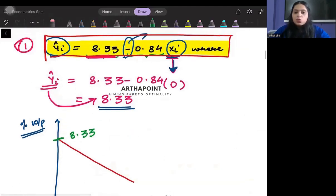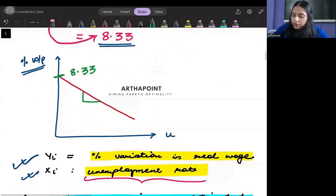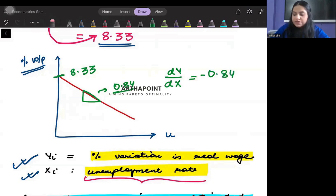And if you notice, this is minus 0.84. The negative sign shows it's downward sloping. And if I want to find the slope of this line, it will be 0.84. If I were to find dy by dx, it will be 0.84 with a negative sign. Y represents the percentage change in real wages and x represents the unemployment rate, and this is minus 0.84.